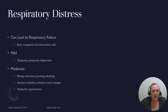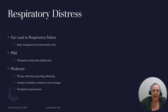Because respiratory distress can lead to respiratory failure so quickly, it's vital that pediatric nurses recognize the signs early and intervene. Mild respiratory distress: tachypnea, tachycardia, and diaphoresis. Moderate respiratory distress: flaring, retractions, grunting, wheezing, anxiety, irritability, mood changes, headaches, and hypertension. A child in moderate respiratory distress is already in significant trouble — we want to catch it at moderate, not wait for severe.